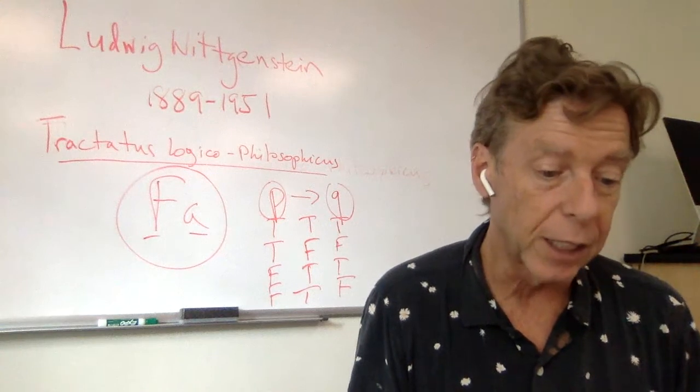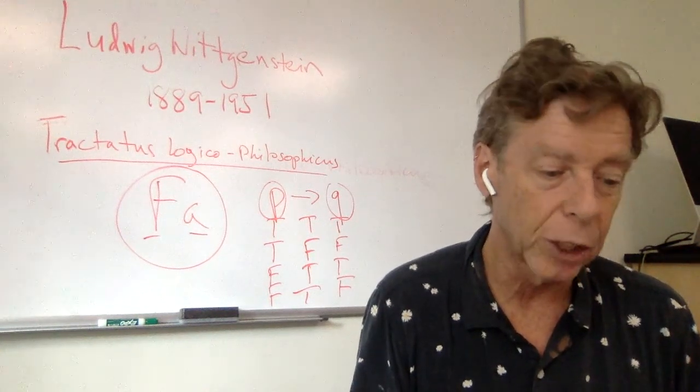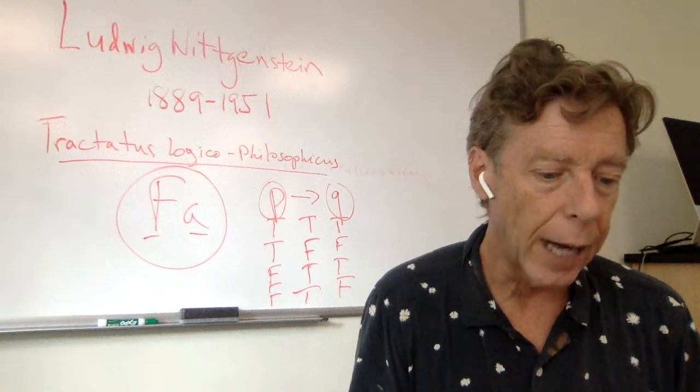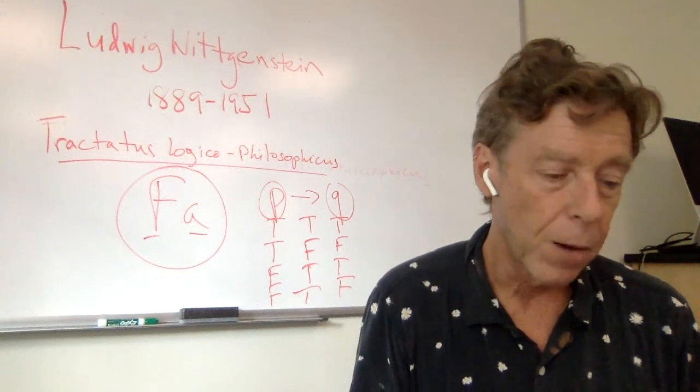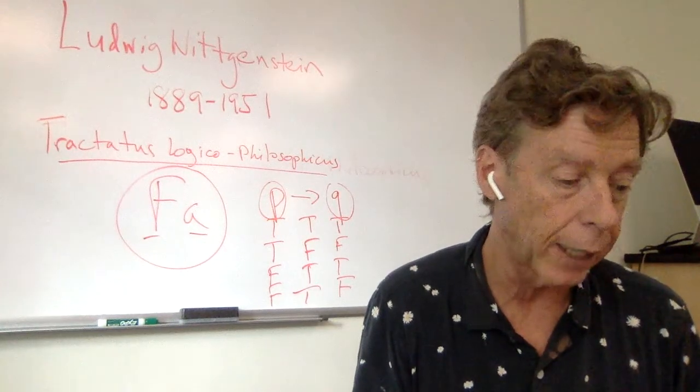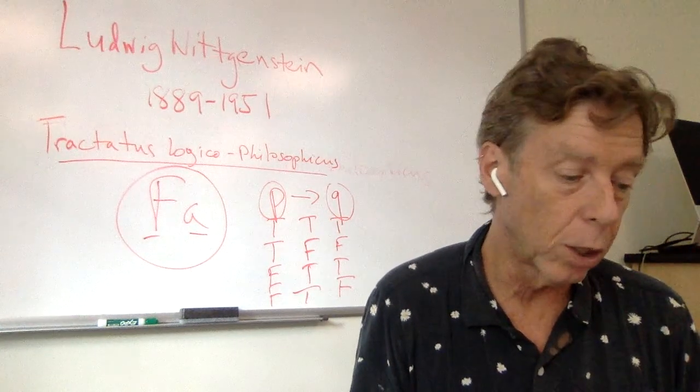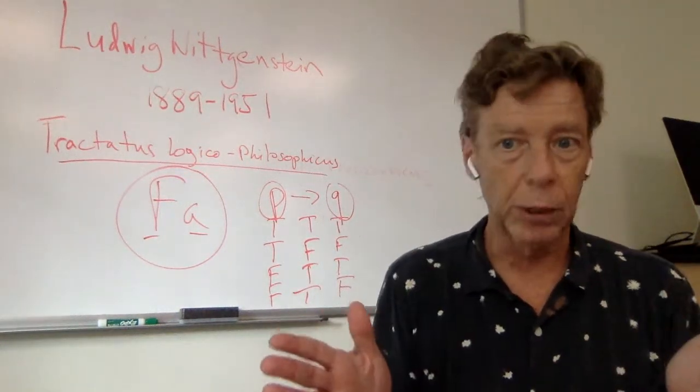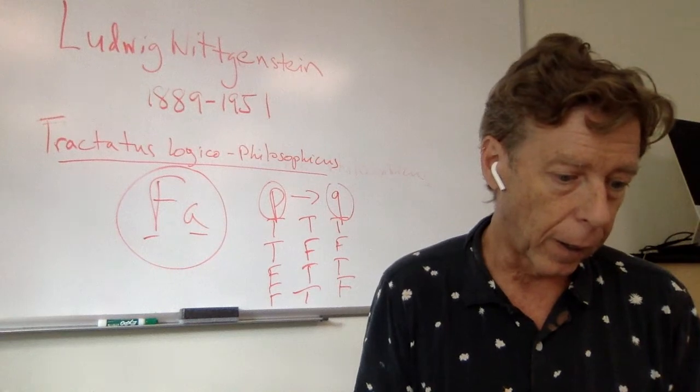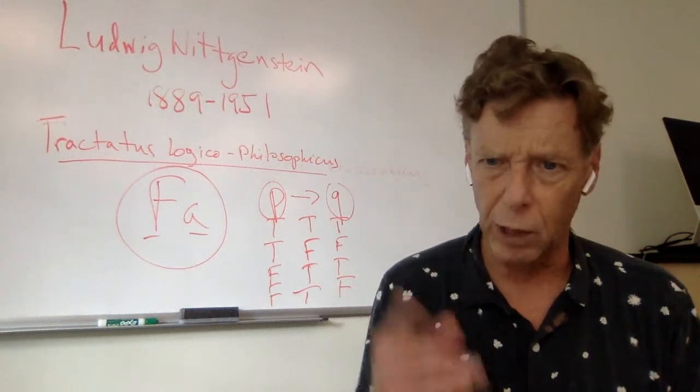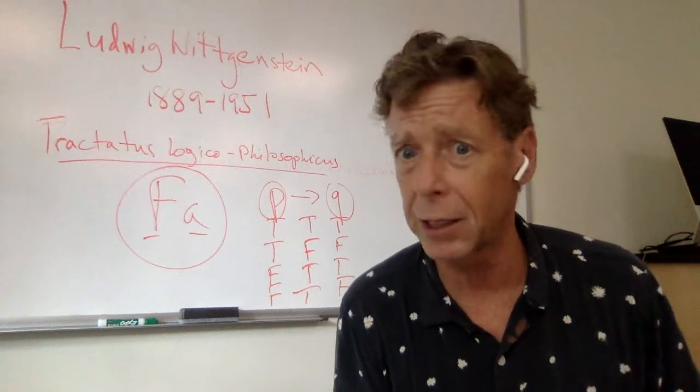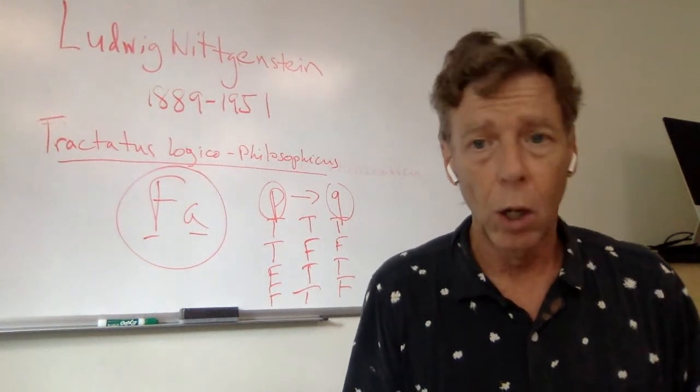The right method of philosophy would be this, to say nothing except what can be said, the propositions of natural science. That is, the propositions of natural science, those can be said, those refer to facts, i.e. something that has nothing to do with philosophy. And then always, when someone else wished to say something metaphysical, to demonstrate to him that he had given no meaning to certain signs in his propositions. So rest content with natural science, that's what human knowledge is, and when someone starts giving you metaphysics or philosophical or ethical claims, you just, the only response of a real philosopher in this sense would be to demonstrate to him that he had given no meaning to his terms, and hence hadn't said anything, or asked anything.